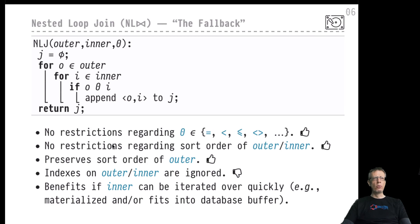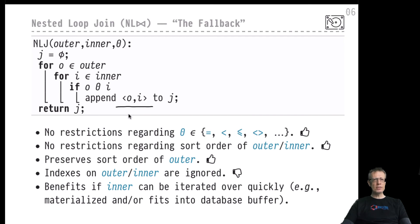There are no restrictions regarding the sort order of outer or inner — any sort order is fine, unlike the merge join algorithm. If we look at the order in which results are appended to J, the order of rows in J reflects the order of rows in the outer table. This can be quite important: if the sort order of the outer table is interesting for the rest of the plan, the nested loop join will preserve and not destroy that particular sort order, and later operations can rely on it.